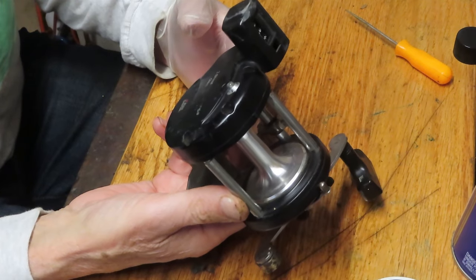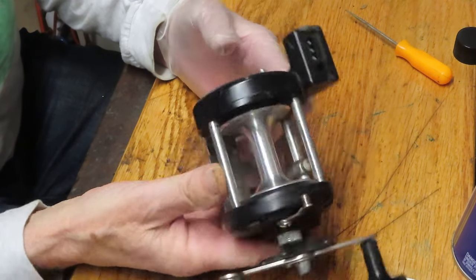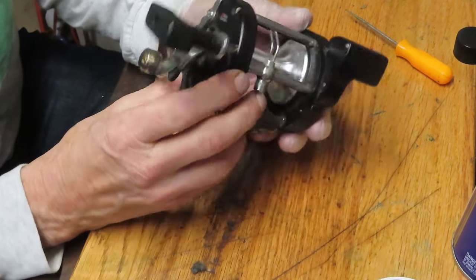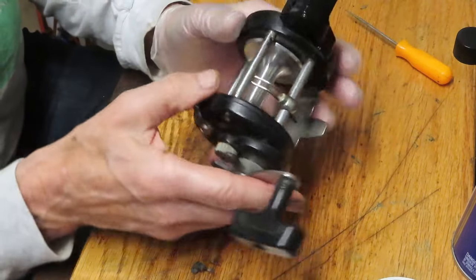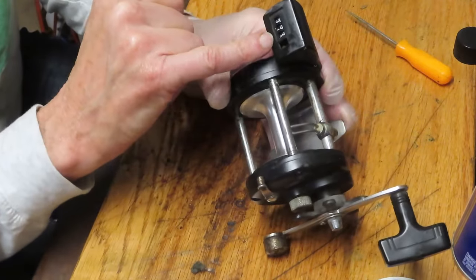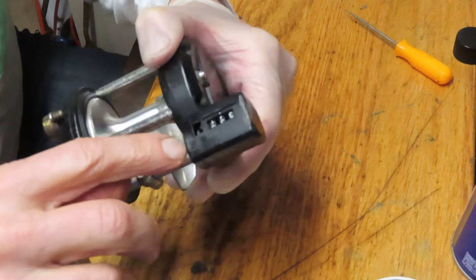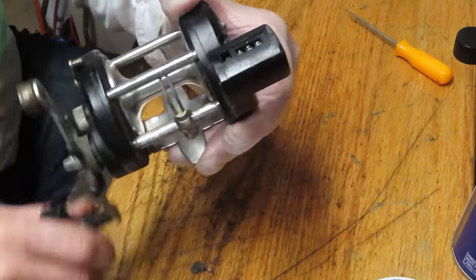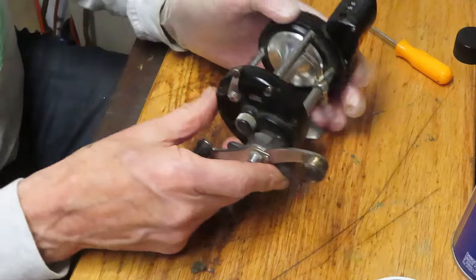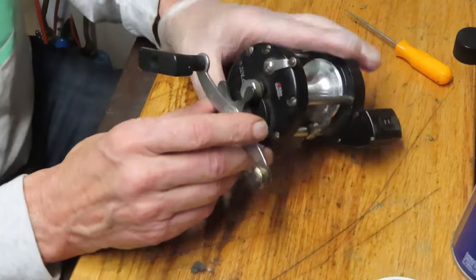This one says it's got two steel bearings. It's hard to see the gear ratio, looks like it's worn off, probably three to one or four to one based on the case size. It does have a broken window in the line counter, but the line counter reset works and the line counter itself works.